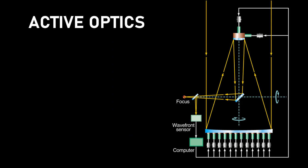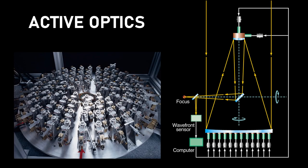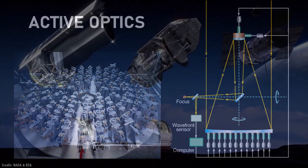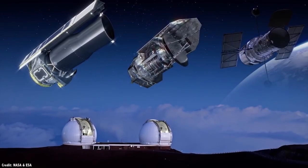Similar to adaptive optics, we also have active optics — but this is not used for atmospheric distortions, rather for distortions due to the weight of large mirrors. Actuators correct the deformation and we get a sharp focus. We are now at the point where the most powerful ground-based telescopes have matched and even exceeded the capacity of space telescopes.